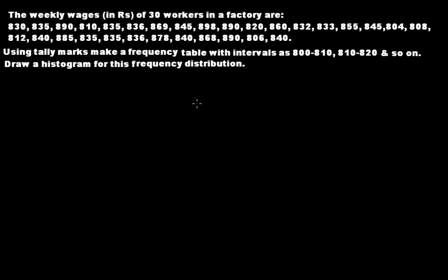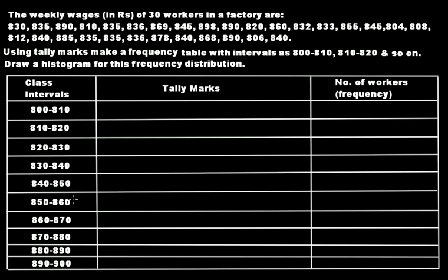The first part is about making the frequency table. The class intervals will be structured so that the upper limit of the first interval is 810 and the lower limit is 800. The width or size of each class interval is 10, since 810 minus 800 is 10, and 820 minus 810 is 10. Our grouped frequency distribution starts from 800 to 810, and so on up to 900, since all the data values fall between 800 and 900.